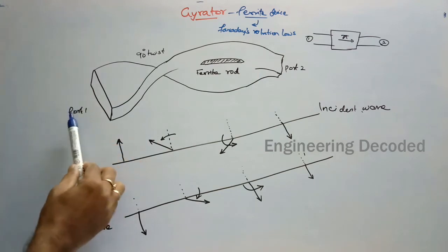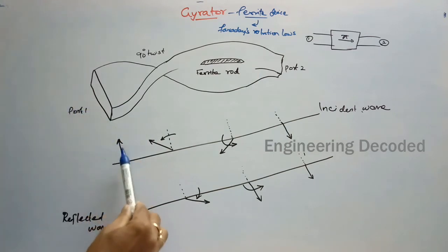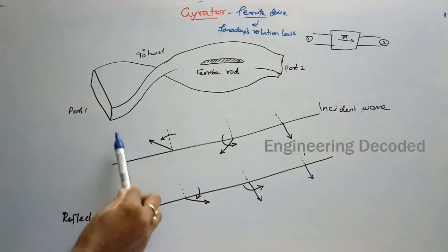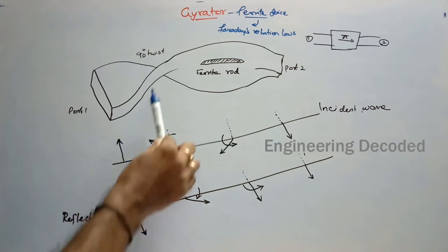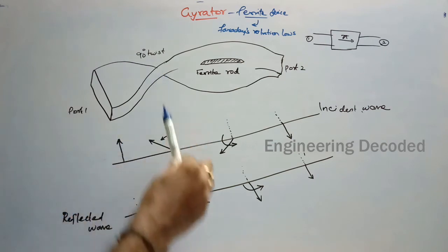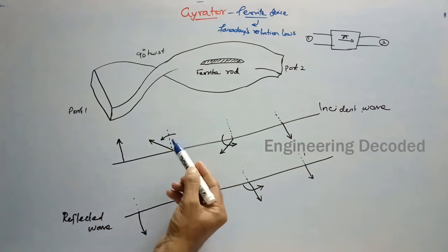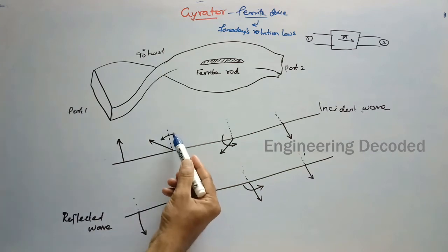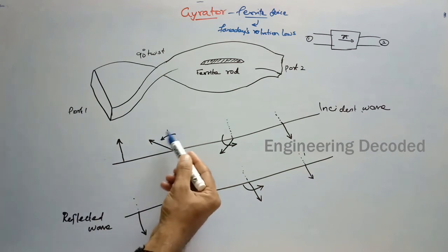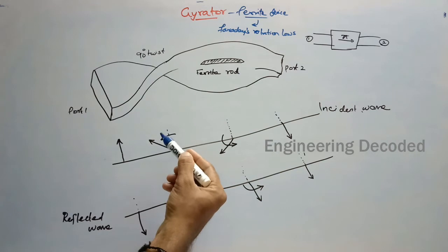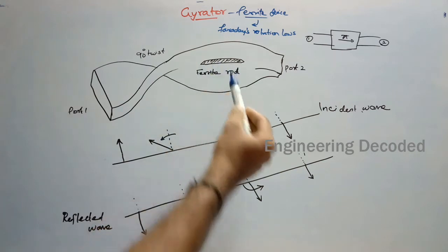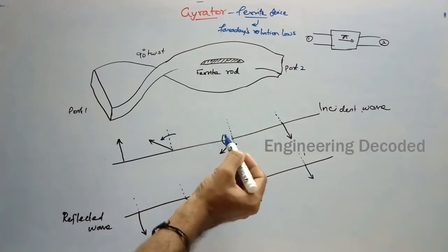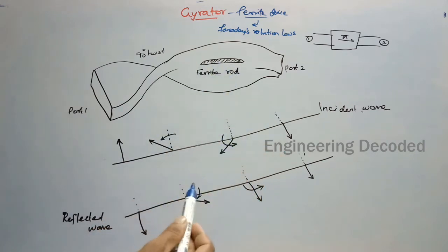A signal is passed through port 1. This signal, when it is crossing this twist, is twisted by 90 degrees in this direction. The same signal, when it is passing through this ferrite rod, is again shifted by 90 degrees.